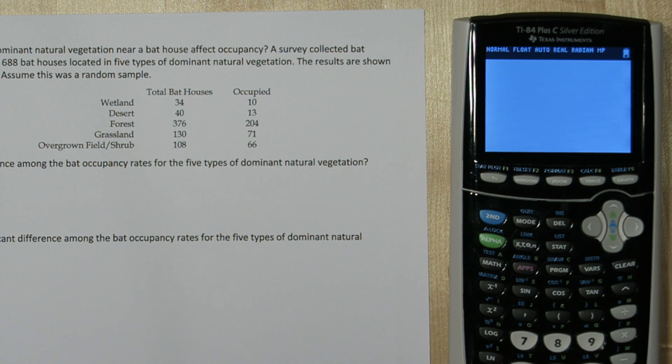So the first thing we need to do is calculate the different occupancy rates. We're going to do this on the calculator. If you press STAT and press ENTER, these are your lists.